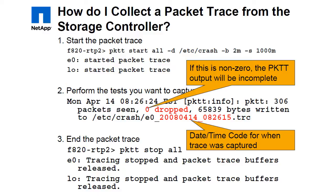The trace file will always have the name dot trc. The command pktt stop all causes all tracing to stop on the named interface or all interfaces. If any unwritten data is in the trace buffer, it will be flushed to the disk.